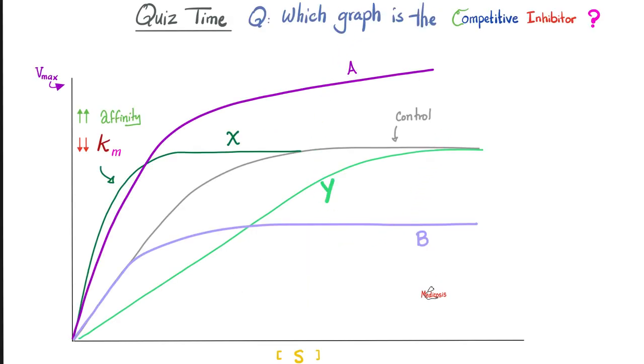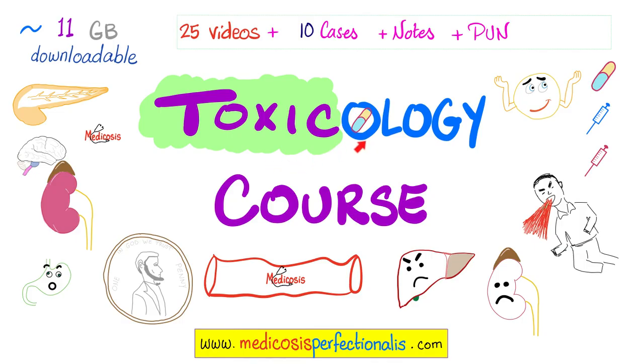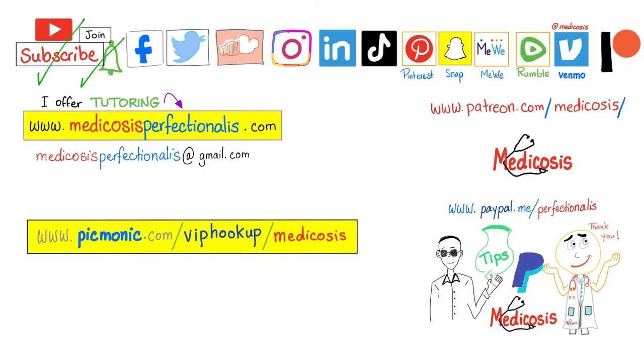Quiz time. Which of the following graphs, A, B, X, or Y, represent a competitive inhibitor? Please let me know the correct answer in the comment section. If you like this video, you will enjoy my toxicology course on my website, medicosisperfectsnetics.com. If you want more graphs, I have a general pharmacology course on my website, talking about pharmacokinetics and pharmacodynamics. Thank you for watching. Please subscribe. Hit the bell and click on the join button. You can support me here or here. Go to my website to download my courses. Be safe. Stay happy. Study hard. This is Medicosis Perfectioneros, where medicine makes perfect sense.